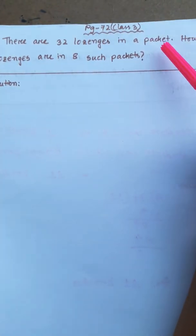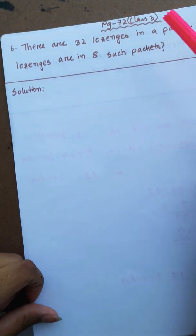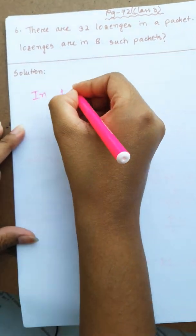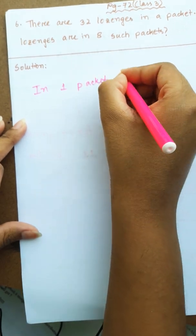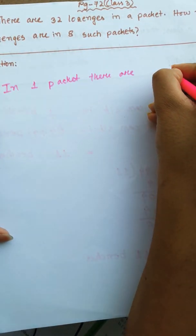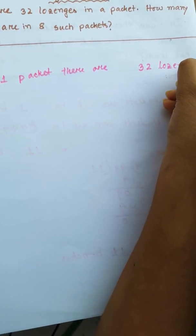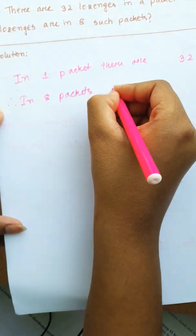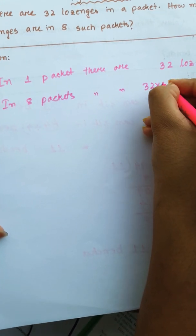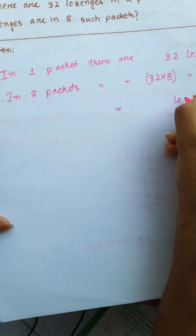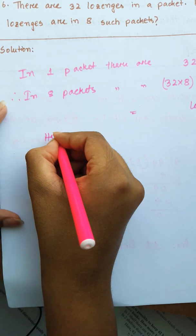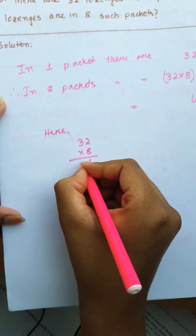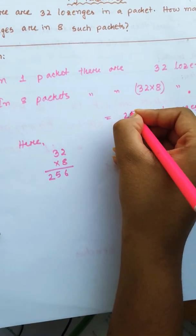There are 32 logins in a packet. How many logins are there in 8 such packets? In 1 packet there are 32 logins. Therefore, in 8 packets there are 32 into 8 logins. Calculating: 8 times 2 is 16, carry 1; 8 times 3 is 24, plus 1 is 25. So the answer is 256 logins.